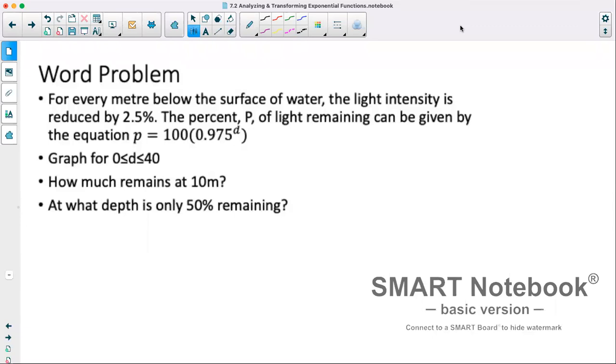We're going to do a word problem. Based off the situation, we'll use graphing technology for it. So for every meter below the surface of the water, the light intensity is reduced by 2.5%. Percent P of light remaining can be given by equation P equals 100 times 0.975 to the power of d. This equation makes sense because essentially if our d is 0, so our surface, this becomes 1 and we have 100. So 1 times 100 is 100, representing we have 100% of light at the surface. Now 2.5% as a decimal is 0.025. So if we take that off of 1 because we're decreasing by that, so we still have 97.5% left. That's how we got this.